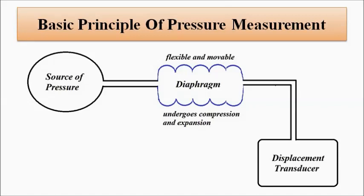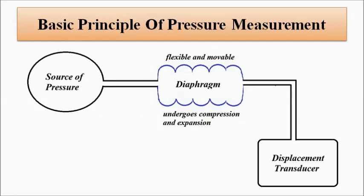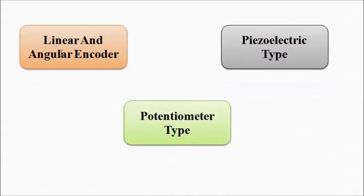For the principle of measurement of pressure, two sensing elements are required. A primary sensing element called the diaphragm is connected to the source of pressure or the body part. It detects the pressure fluctuations, causing it to expand or get compressed. That compression and expansion is detected by a secondary sensing element — the displacement transducer — which gives an electrical output. Different types of displacement transducer can be used: capacitive, inductive, strain gauge, differential transformer (LVDT), linear and angular encoders (optical and magnetic), piezoelectric, or potentiometer type.